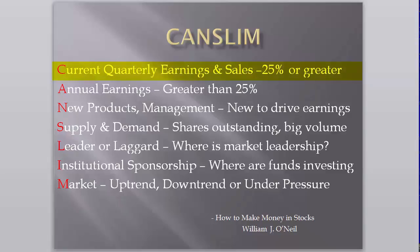The C in CAN-SLIM stands for Current Quarterly Earnings and Sales, and reminds us that we should be looking for stocks that have a minimum of 25% year-over-year increases in quarterly earnings and/or sales, and preferably accelerating earnings or sales. The A in CAN-SLIM stands for Annual Earnings and reminds us that we should be looking for stocks that have an average of at least 25% annual earnings growth over the past three to five years.